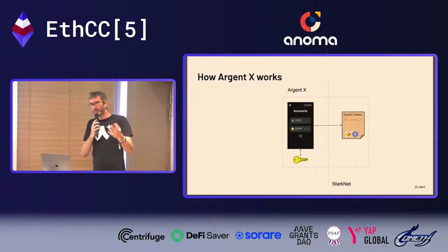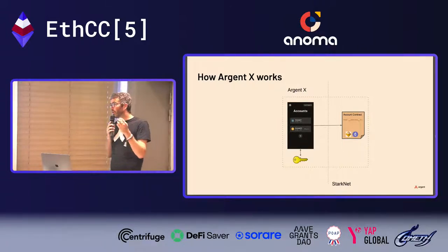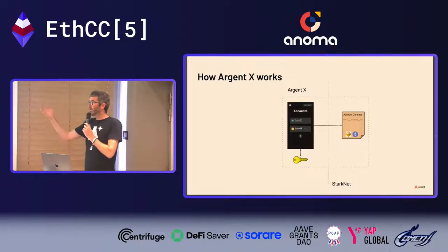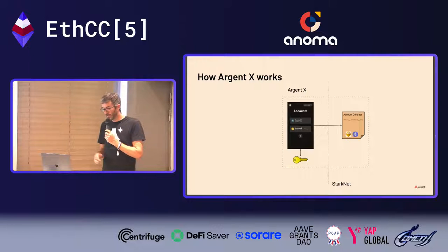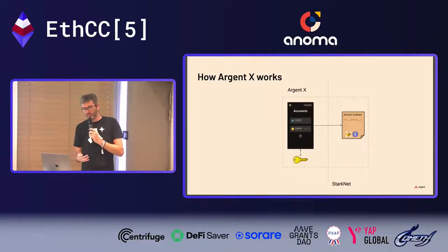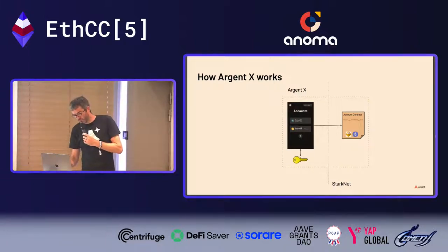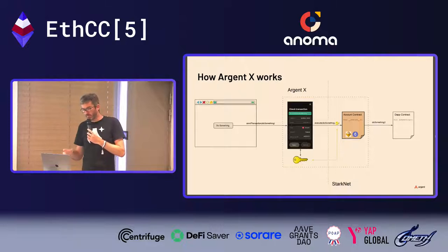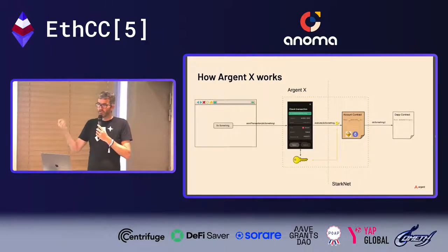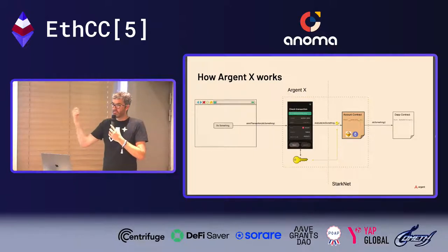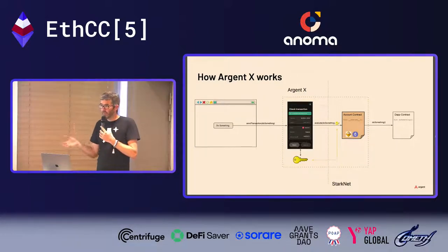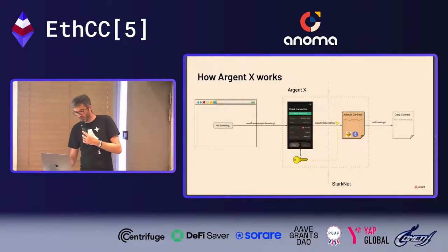When you go to a dApp and connect your wallet, clicking a button triggers the wallet to open — just like MetaMask. You approve the transaction, it gets sent, the account executes it and validates whether the provided signature is valid according to the account's custom logic. If yes, it executes the transaction.